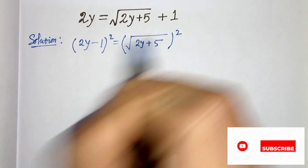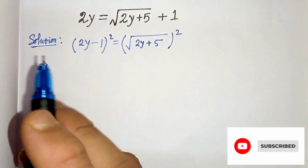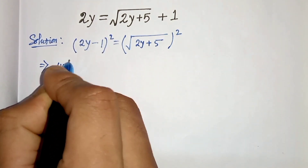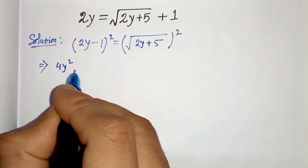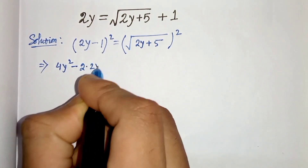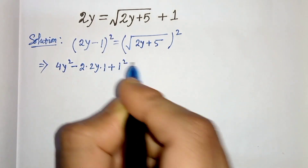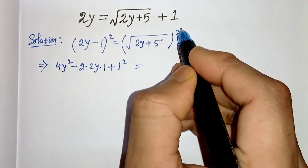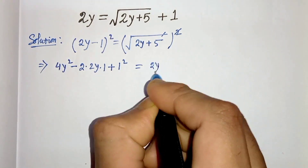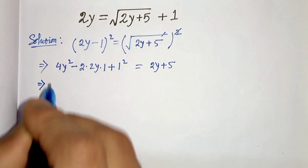Squaring both sides, the left side expands using the (a minus b)² formula: a² minus 2ab plus b², giving us 2y squared minus 2 times 2y times 1 plus 1 squared, which is 4y² minus 4y plus 1. On the right hand side, the square and square root cancel, leaving 2y plus 5.